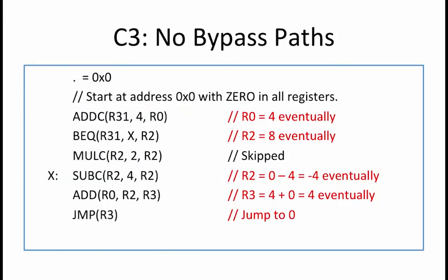We can now determine the behavior of the ADD instruction, which is that it assumes R0 equals 4 and R2 equals 0, and will eventually write a 4 into R3. Finally, the jump instruction wants to read the result of the ADD. However, since there are no bypass paths, it reads the original value of R3, which was 0, and jumps to address 0.